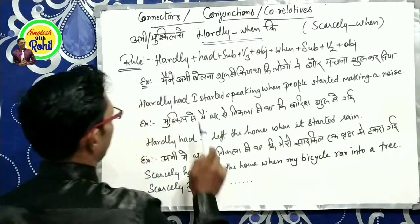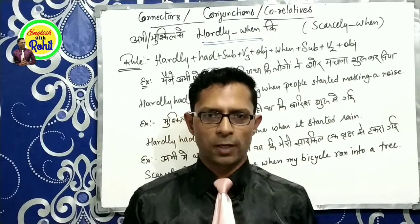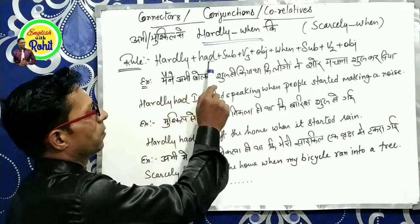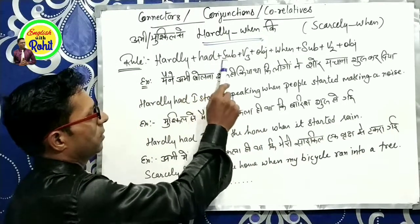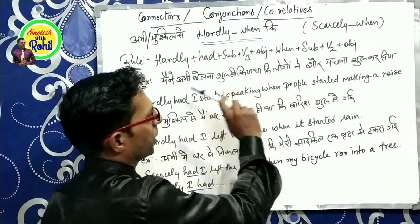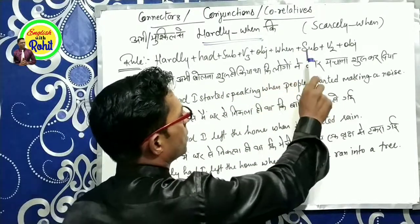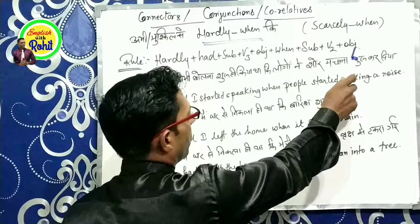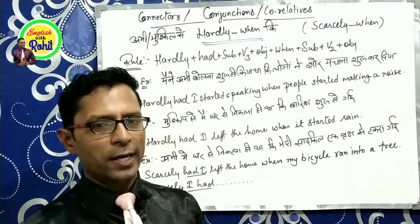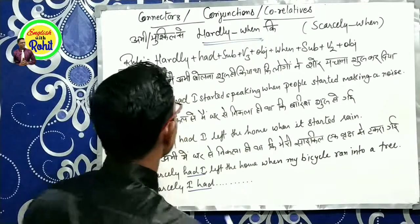Hardly When का sentence बनाने के लिए एक rule follow करना पड़ेगा: सबसे पहले Hardly, फिर Had, फिर Subject, फिर Third Form of the Verb, फिर Object। दूसरे sentence को जोड़ते समय: When, Subject, Second Form of the Verb, फिर Object। आप Hardly When का sentence इसी rule से बनाएंगे।